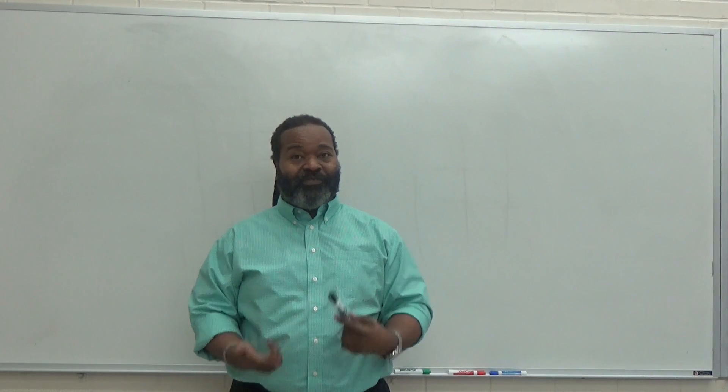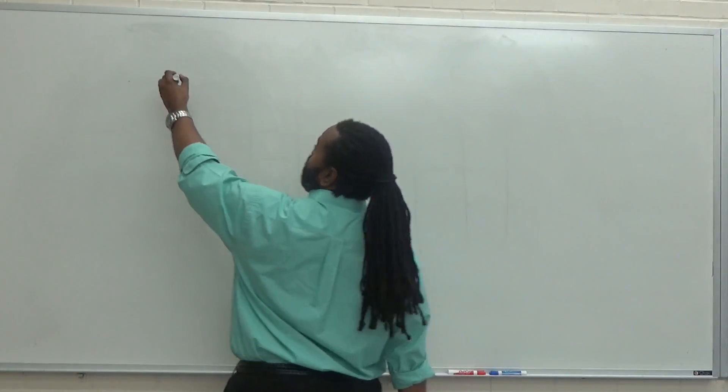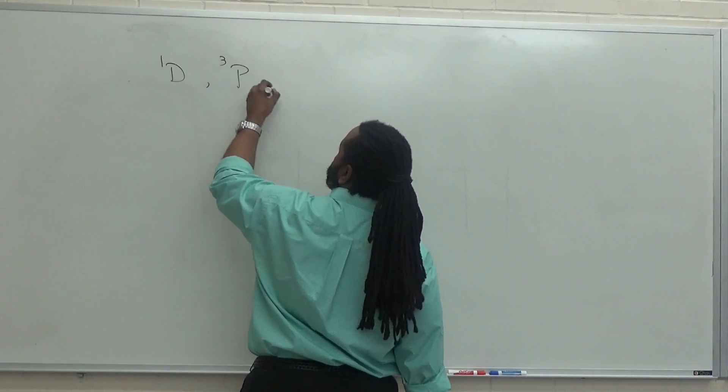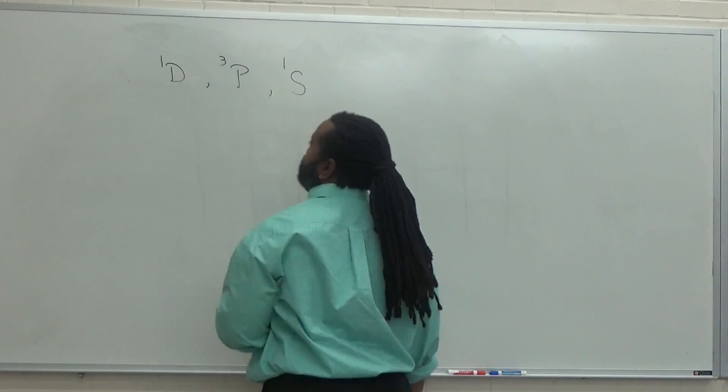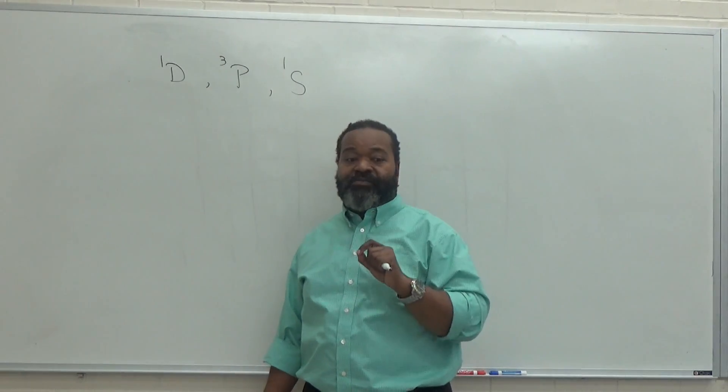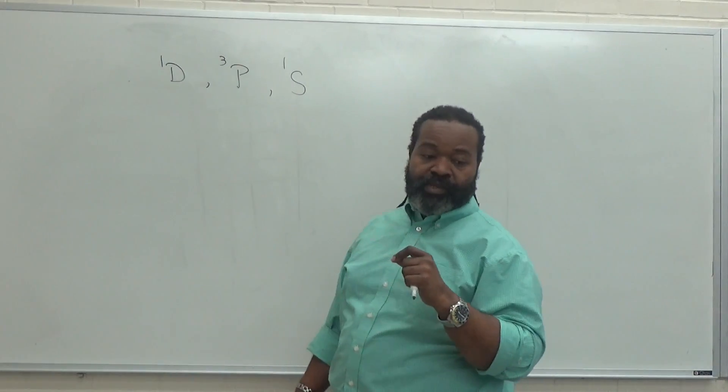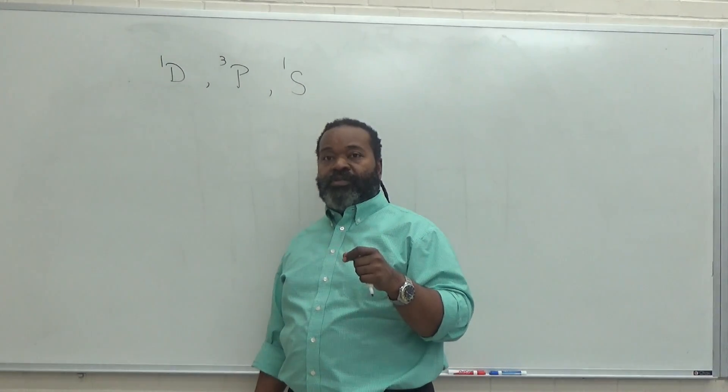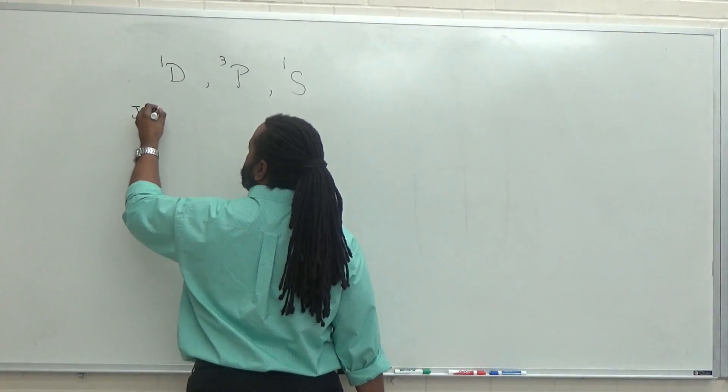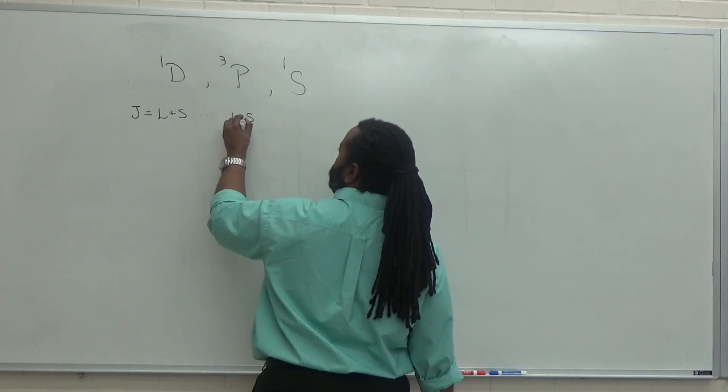The final step in completing the full microstates method requires me to take the terms that I had: a singlet D, and a triplet P, and a singlet S. We have the 2S plus one. We have the L. We do not have the J. And in order to complete that, that's all I have left to do. So the rule goes that when we're looking at our Js, we want to figure out from L plus S down to L minus S.